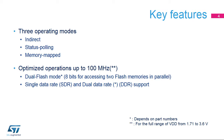The Quad SPI Memory Interface offers three operating modes. It is optimized for communication with external memories with support for dual flash mode, allowing access to 8-bits in a single reading cycle. It also supports both single and dual data rate operation.